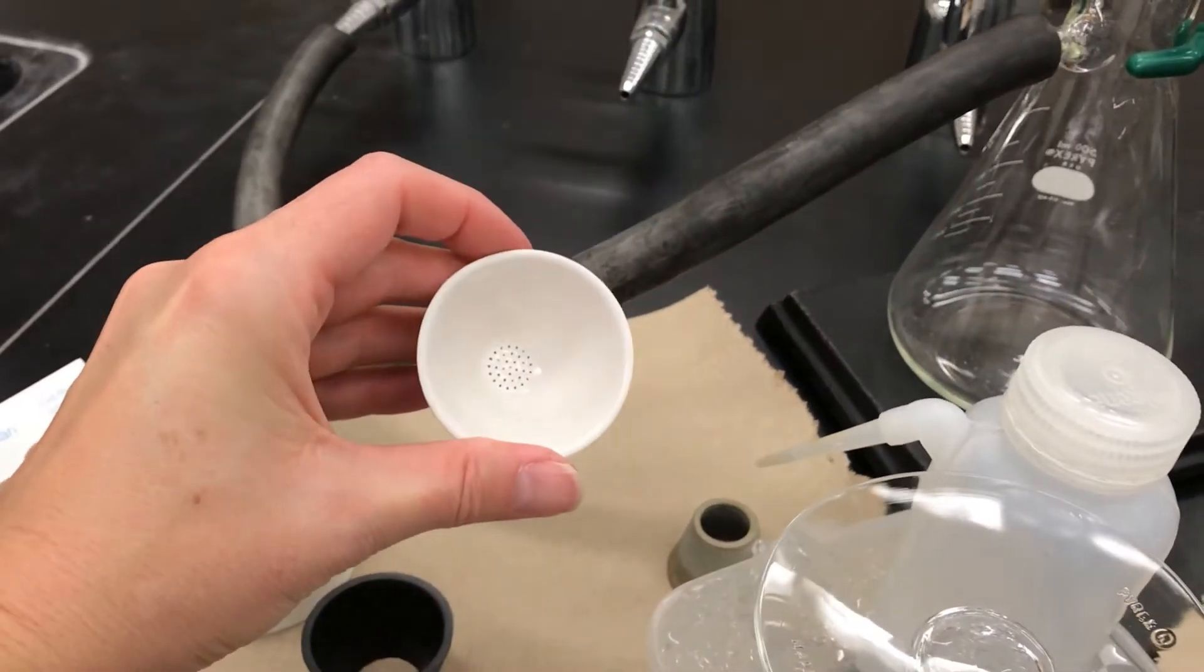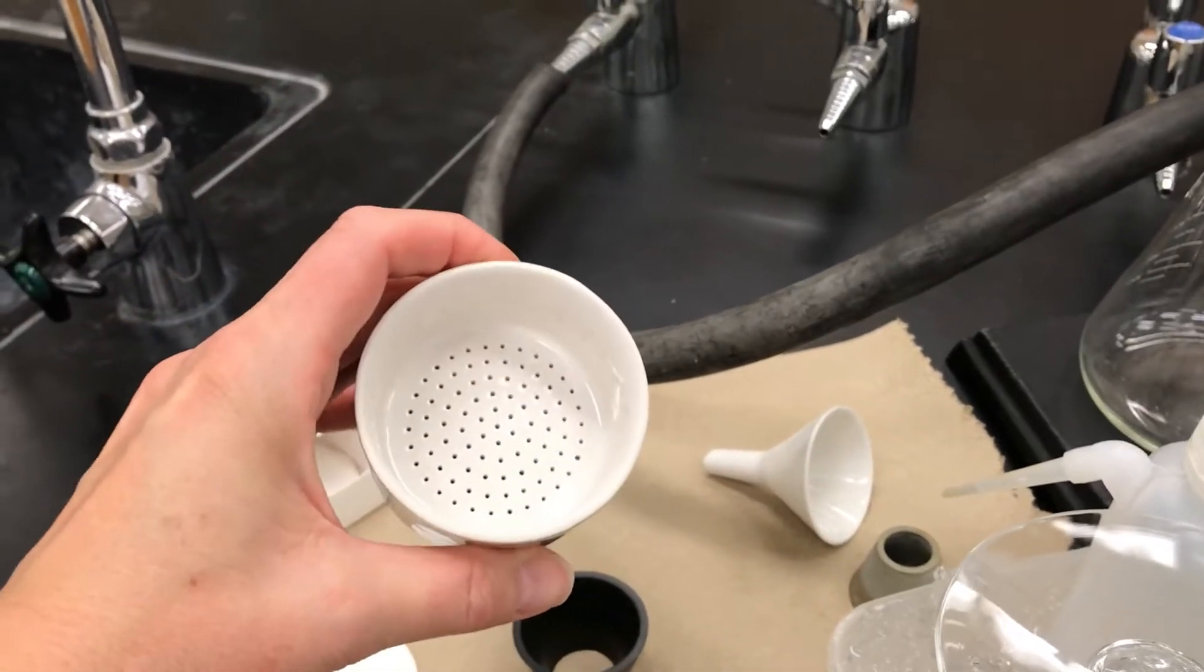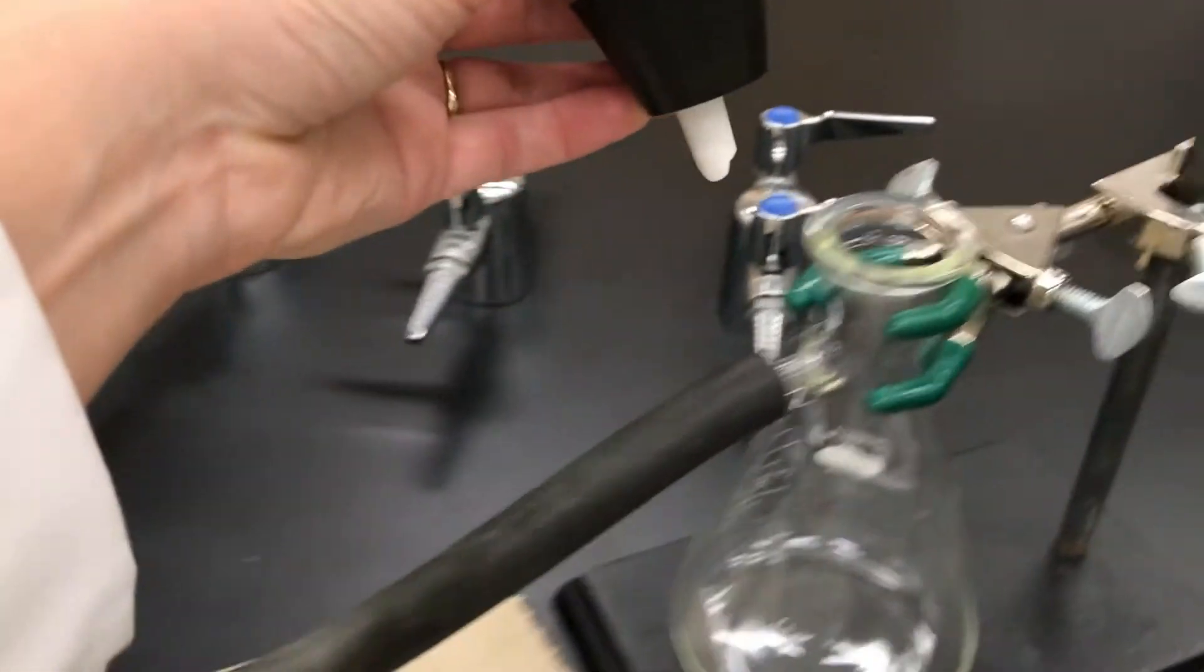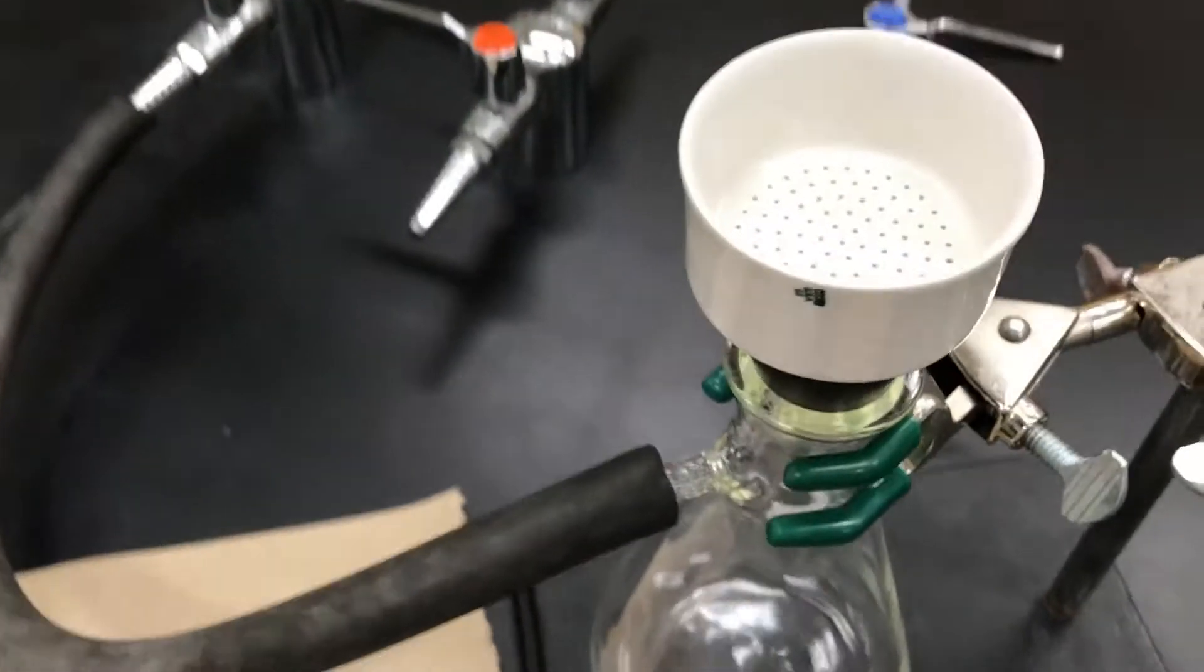And we need to put a funnel inside. There are different kinds. That first one was for small scale, but we have a large scale here. So I'm going to use this one, which is called a Buechner funnel. You use a little rubber adapter to connect the funnel to the flask and that'll create a good seal.